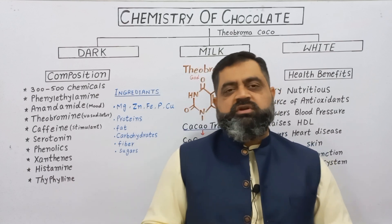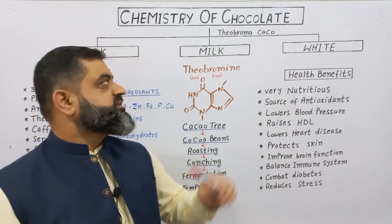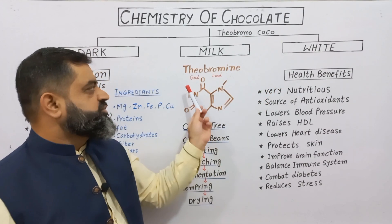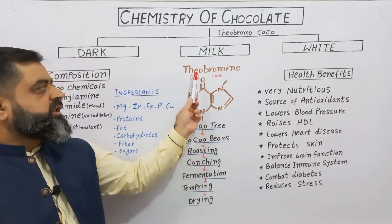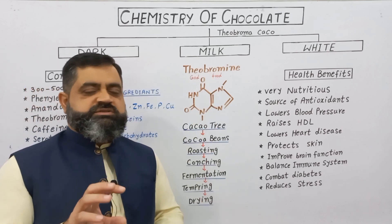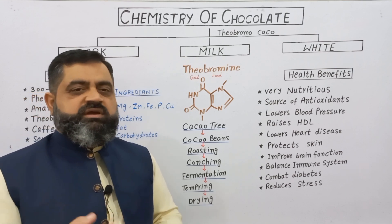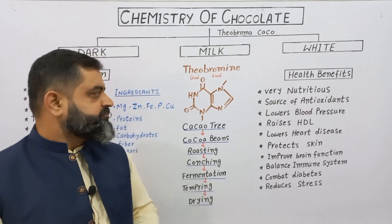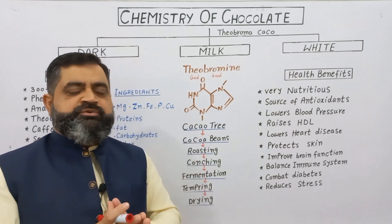First of all, chocolate is obtained from a plant — a tree which is known as Theobroma cacao. The chemical structure of theobromine is shown here. 'Theo' means god and 'broma' means food, so chocolate was considered in the past as a food of gods due to its very pleasant effects on the body.